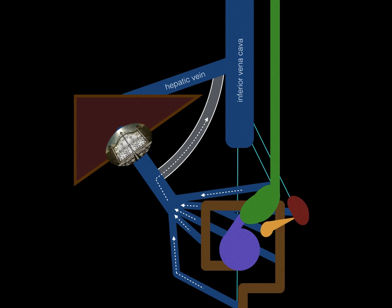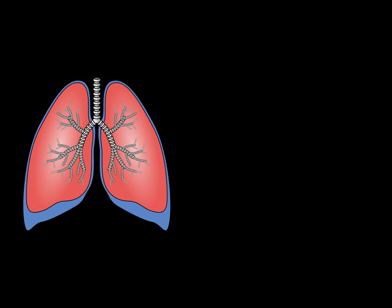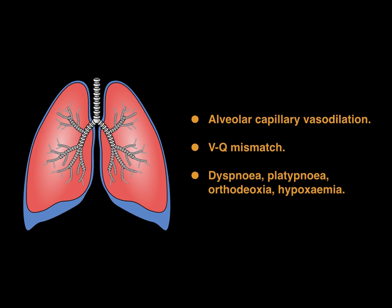Two other important clinical features of portal hypertension are hepatopulmonary and hepatorenal syndrome. Their mechanisms are incompletely understood but are thought to be secondary to portal hypertension release of vasodilatory mediators like nitric oxide. In hepatopulmonary syndrome, both the lungs are structurally and histologically normal. The vasodilatory mediators cause vasodilation of the alveolar capillaries, leading to a mismatch between the ventilation of the alveoli and the perfusion of the alveoli by blood.